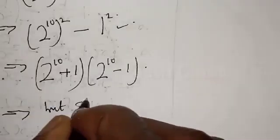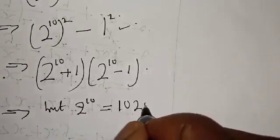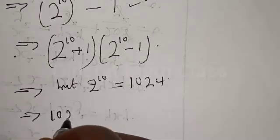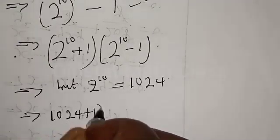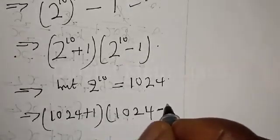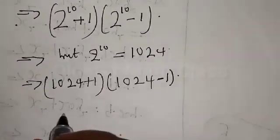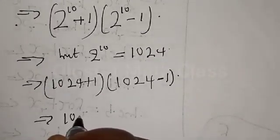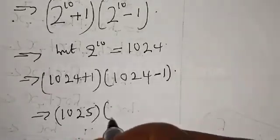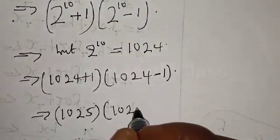But 2 raised to power 10 equals what? 1024. Then this implies that we have 1024 plus 1 into 1024 minus 1. Then 1024 plus 1 is 1025. This implies that we have 1025 into 1023, since 1024 minus 1 is 1023.